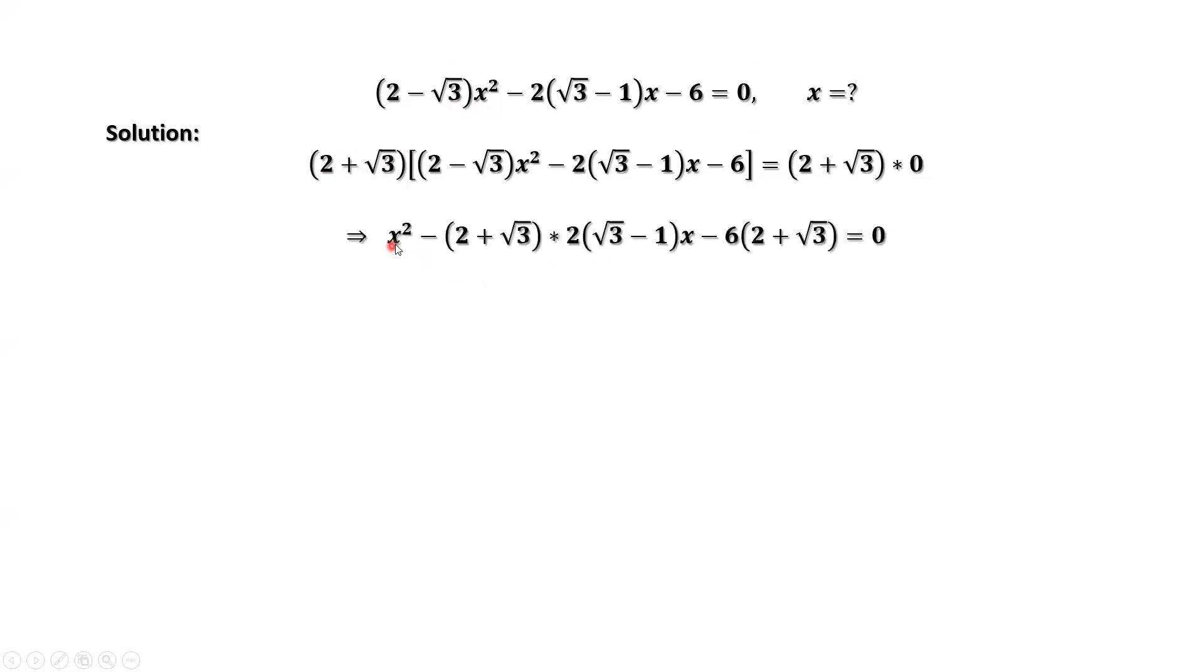We have x² - (2 + √3) × 2(√3 - 1)x - 6(2 + √3). The right-hand side is (2 + √3) × 0 = 0.